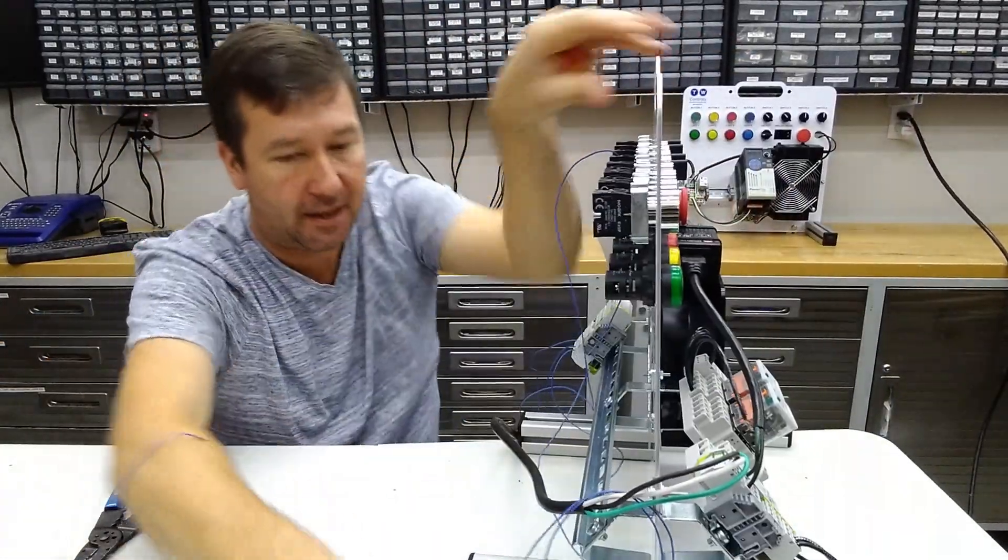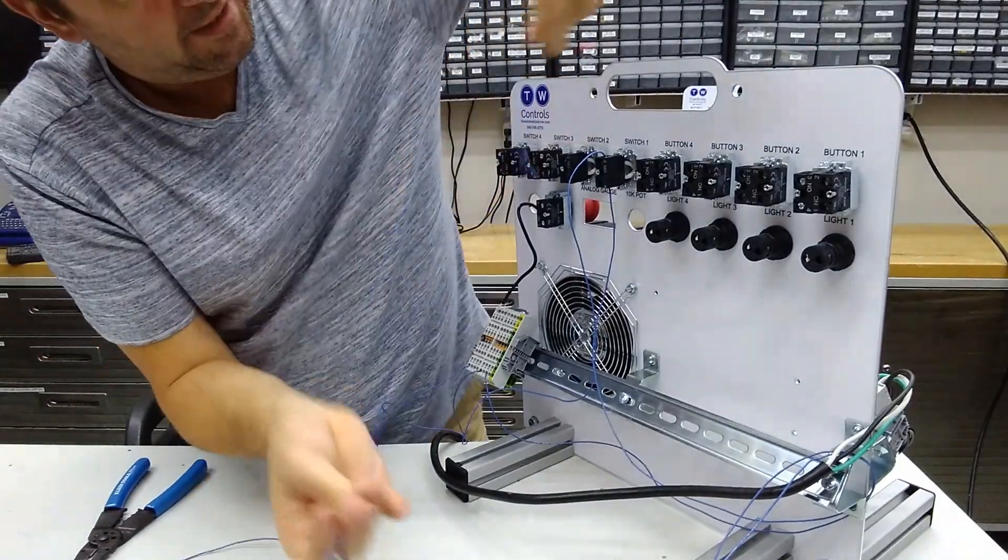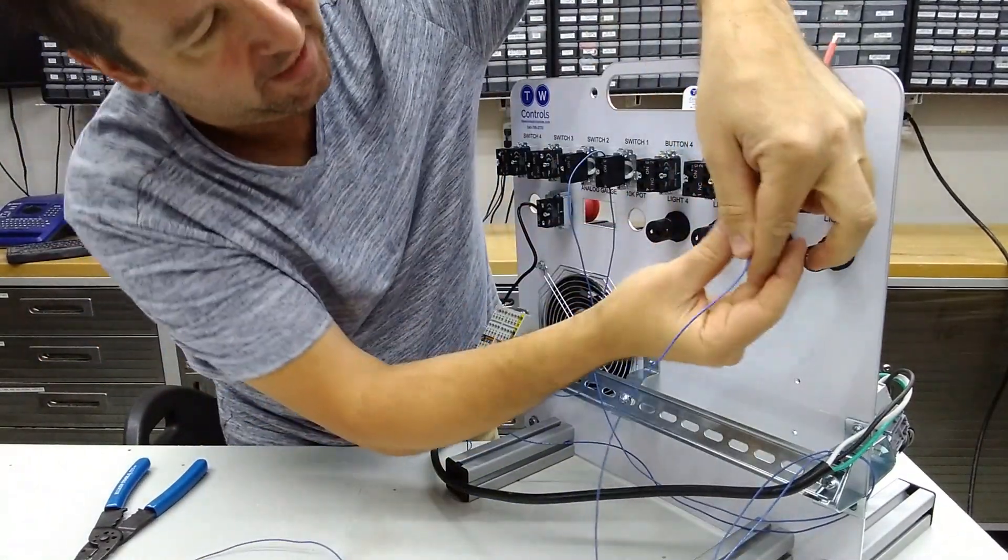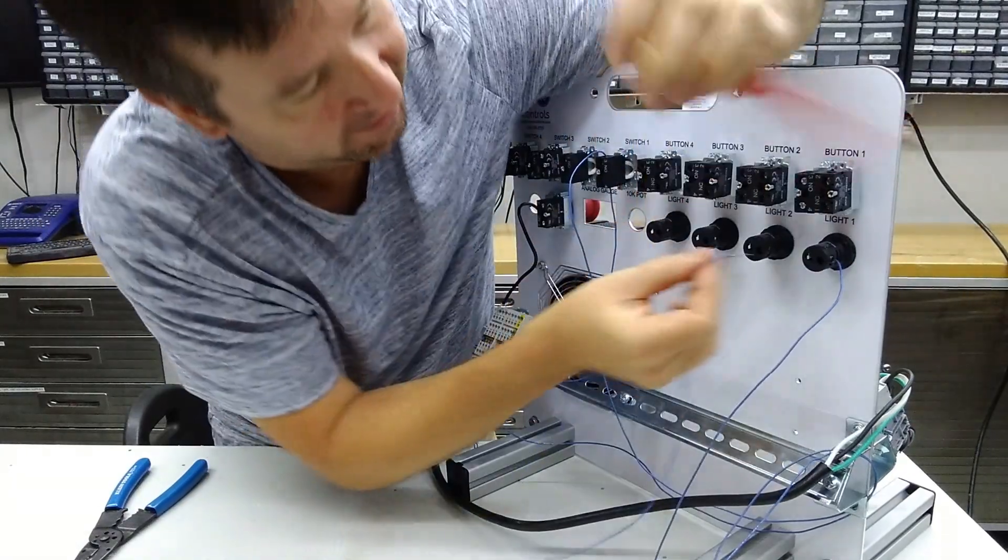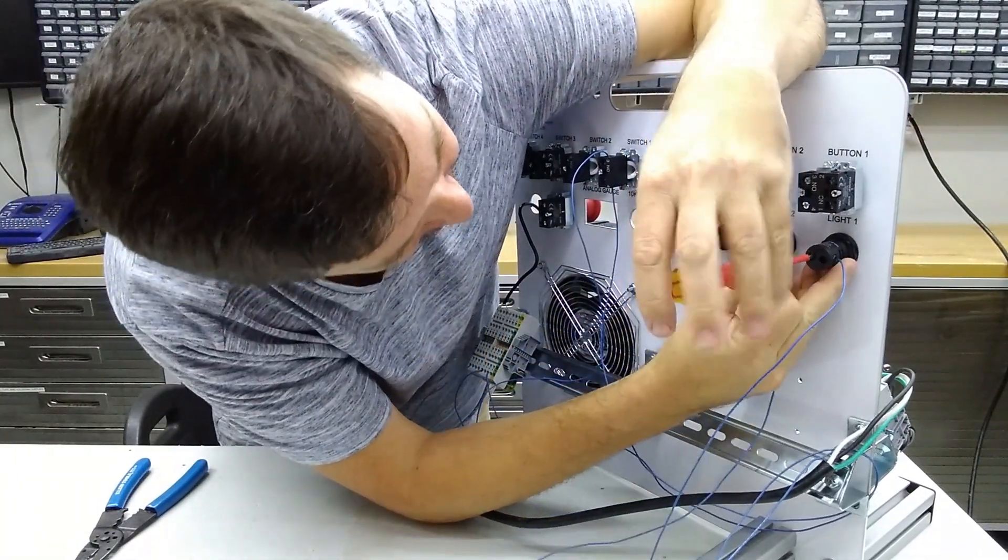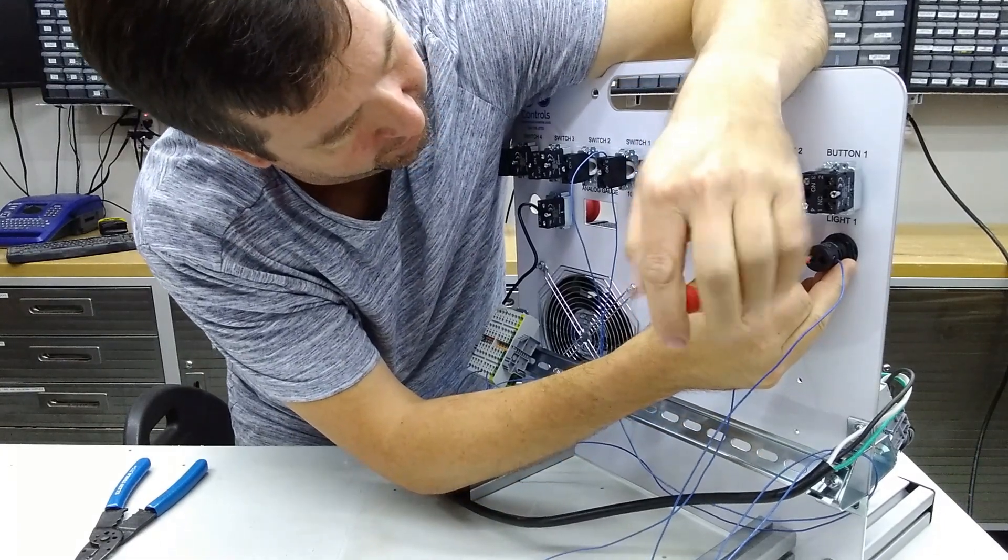And now on the back, we're going to take one of those wires and connect it to one side of our green indicator light. Then we'll take the other side and connect it to the other side of our green indicator light.